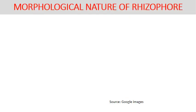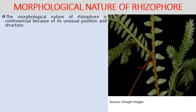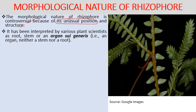The morphological nature of the rhizophore is still controversial because of its unusual position and structure. It is not similar to a root or stem. Some scientists view it as similar to a root, some as similar to a shoot or stem, and some consider it an organ sui generis — neither root nor shoot.